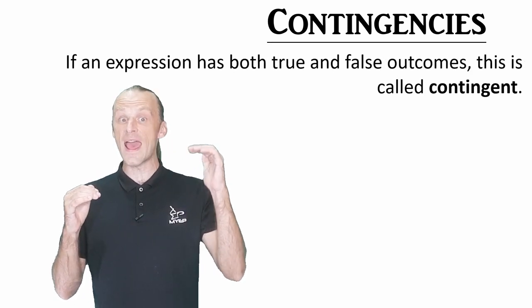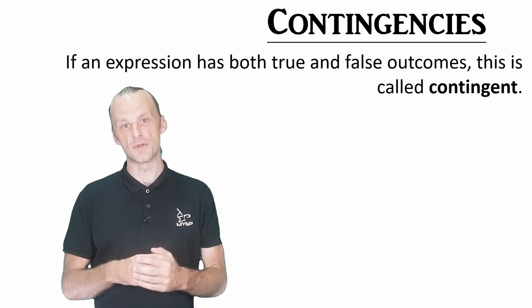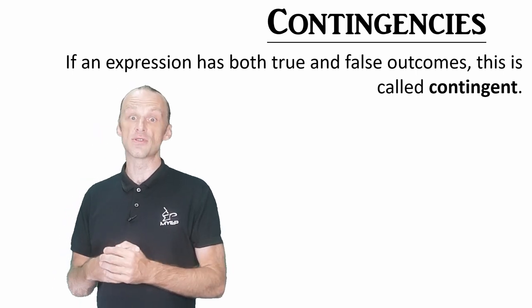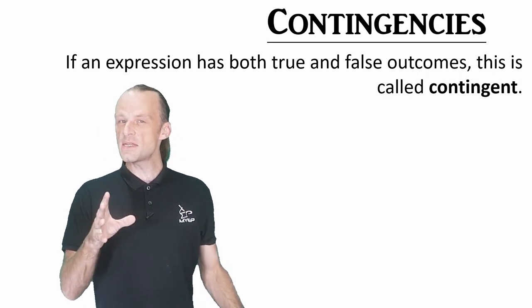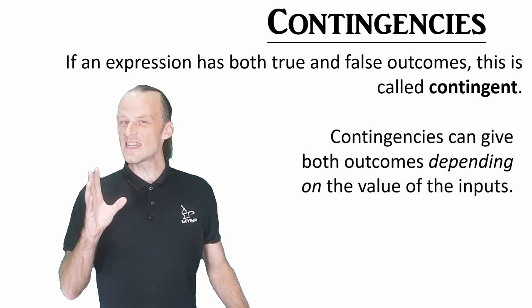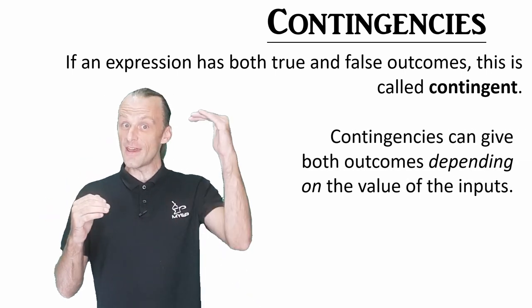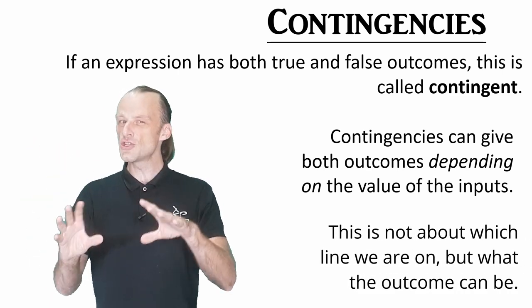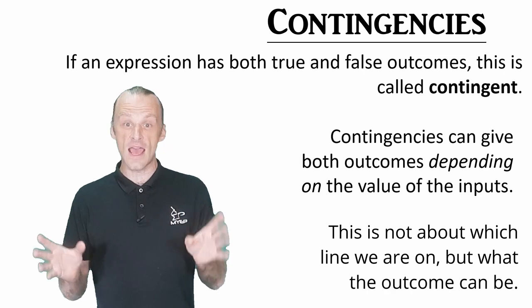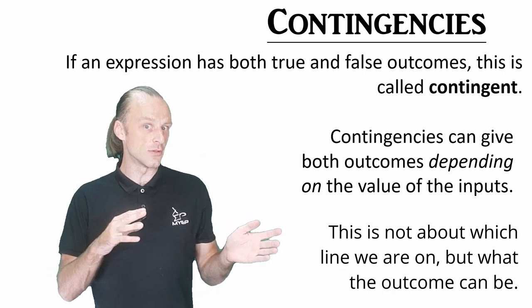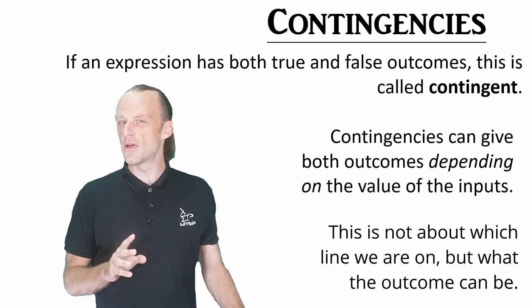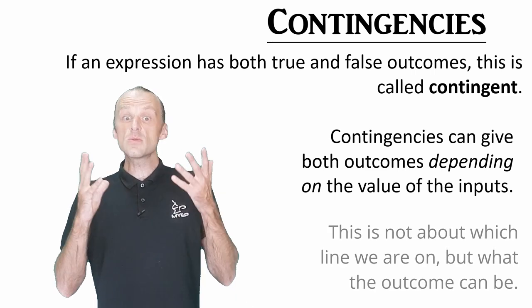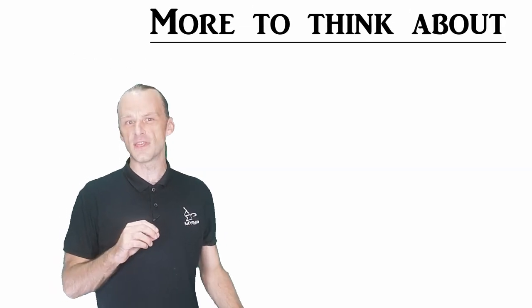Now that we've looked at tautologies and inconsistencies, we can see the third possibility: an expression that has both true and false outcomes on its truth table, depending on the truth values of the input statements. These expressions are called contingent. If we're going to get technical, then which line of the table we end up on always depends on the inputs, but for a tautology or an inconsistency, this doesn't affect the outcome, which will be true or false. In a contingent expression, this is not the case. So this is why careful logic gets really really hard.